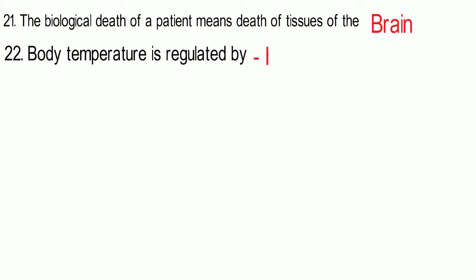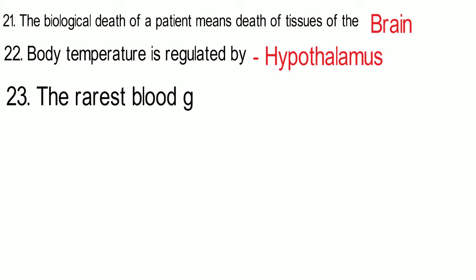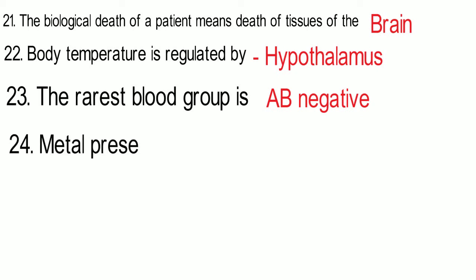Body temperature is regulated by the hypothalamus. The hypothalamus is also known as the master of the master gland, and it controls the pituitary secretions. The rarest blood group is AB negative.